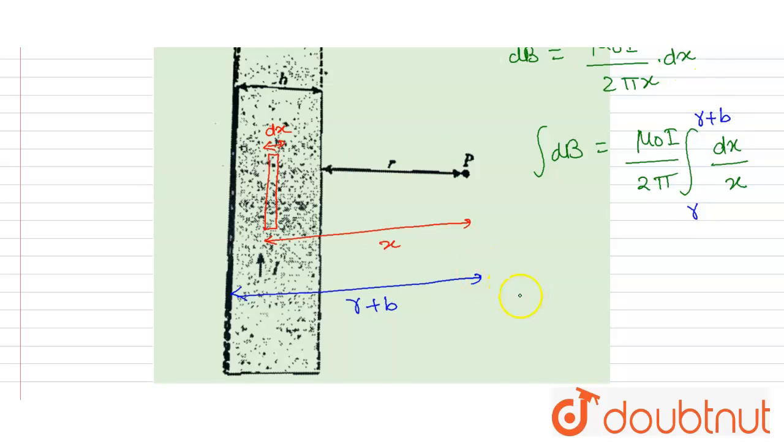So the integration B will be equal to μ₀I divided by 2π.